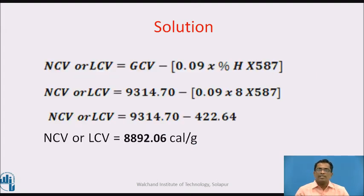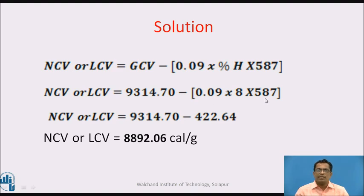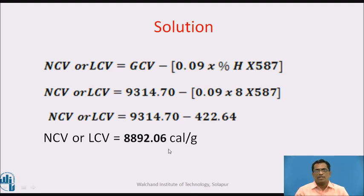LCV for Numerical 3: LCV = GCV − 0.09 × %H × 587 = 9314.70 − 0.09 × 8 × 587. Simplifying, LCV = 8892.06 kcal/kg.